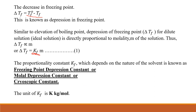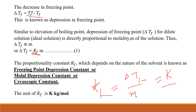The unit of Kf is Kelvin·kg/mol. This unit comes from the equation: Kf = ΔTf / molality. Since ΔTf has units of Kelvin and molality has units of mol/kg, rearranging gives Kf the unit of Kelvin·kg/mol.